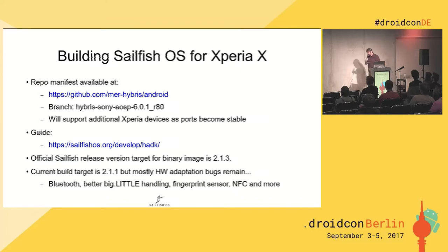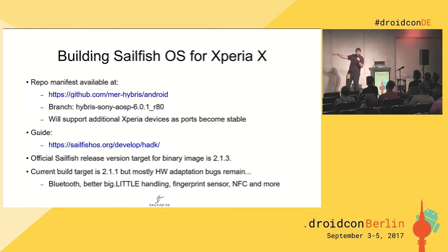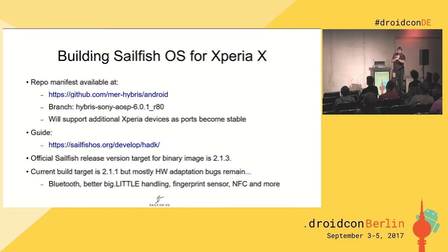If you build on version 2.1 there may be some bugs, but there aren't many bugs relating to Xperia specifically in that release. Most things are in the hardware adaptation which is always current since it's public. Known issues include Bluetooth — though one of our engineers may have fixed it yesterday. This is our first device with the fast CPU and slow CPU configuration, so task allocation in Systemd isn't optimal yet. We have basic fingerprint sensor support but it's not yet hooked up to the hardware underneath. NFC hasn't been implemented yet as this is the first device we've had with NFC support.